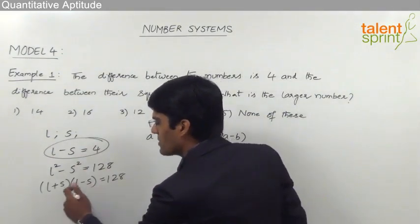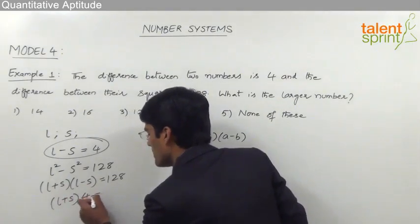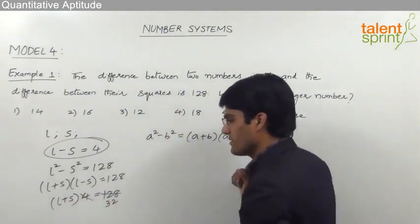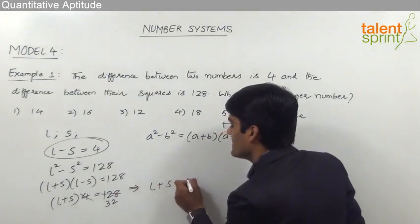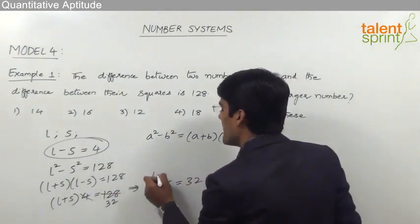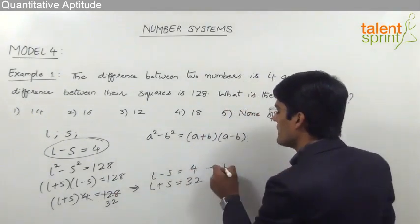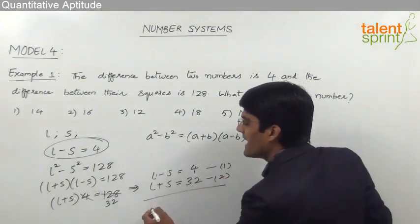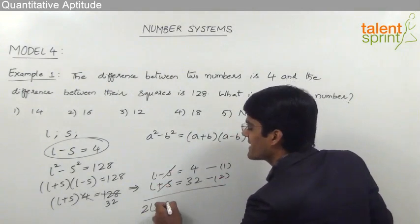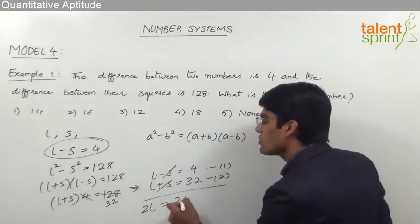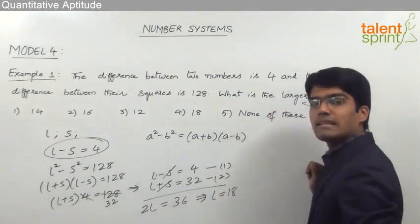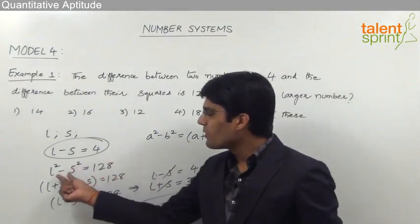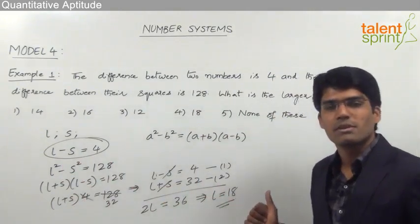Substituting, we get (L + S) × 4 = 128, so L + S = 32. We now have two equations: L + S = 32 and L - S = 4. Adding both equations, 2L = 36, so L = 18. The larger number is 18, which is given in option number 4.